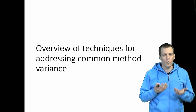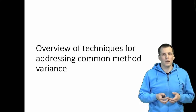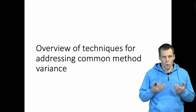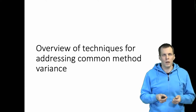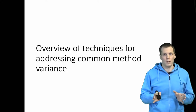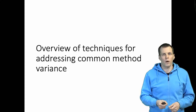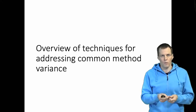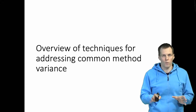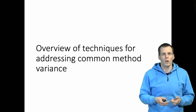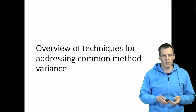Common method variance is commonly a concern in cross-sectional studies. There are statistical techniques that are supposed to address this issue, though whether those techniques work or not is another question. In this video I will give an overview of some of the more commonly used techniques. I have another set of videos that talk about specific aspects of different techniques and their specific problems, but here I just provide an overview of what these techniques are based on and what kind of principles we can generally apply to deal with the common method variance problem.